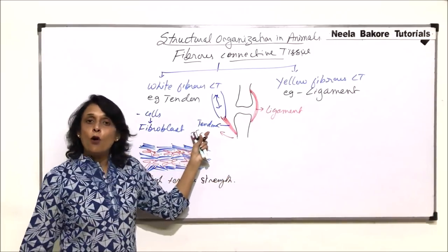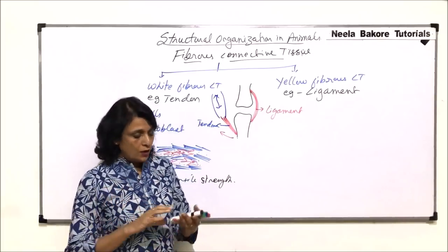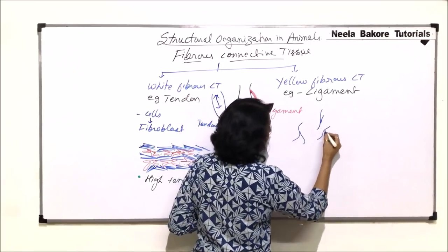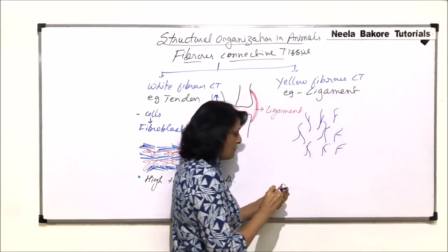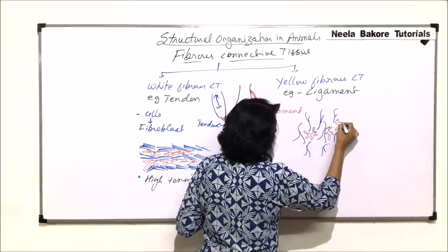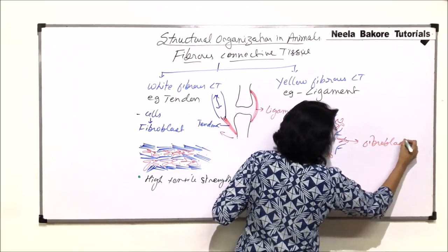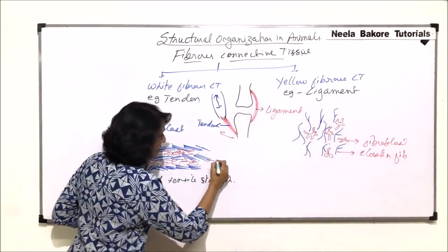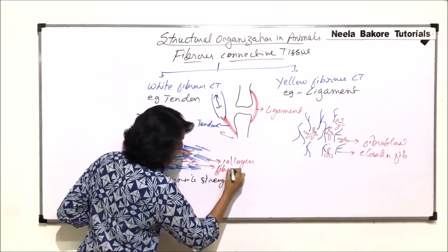Ligaments have more elastin fibers. These elastin fibers are also arranged in a particular pattern, but elastin fibers are always single and they are branched. In between these branched fibers we find fibroblasts. So the cell is again the same — fibroblasts — but the fiber produced is elastic. So these are fibroblasts and these are elastin fibers, whereas in tendon these are collagen bands with fibroblast cells in between.